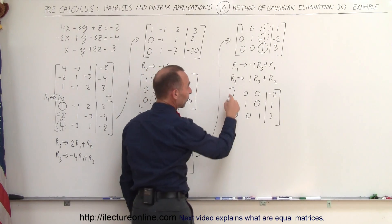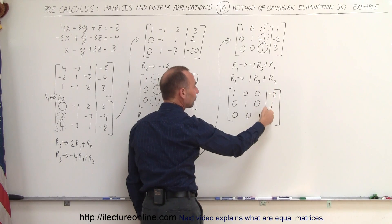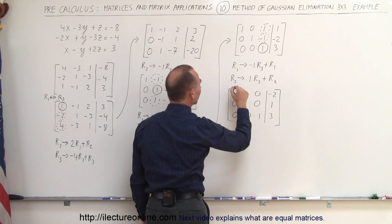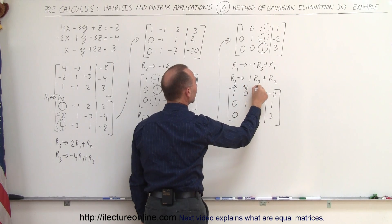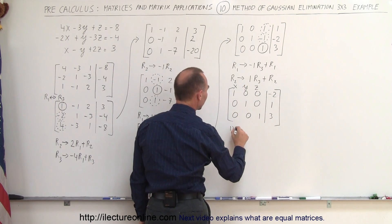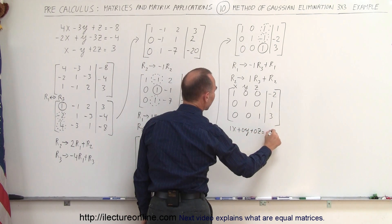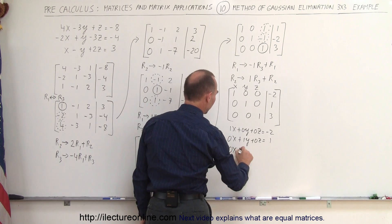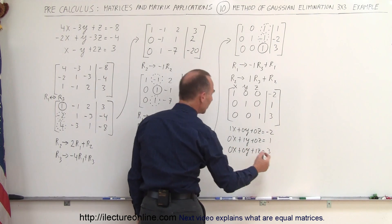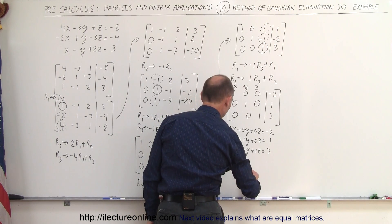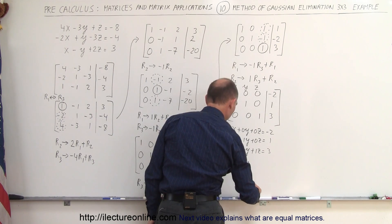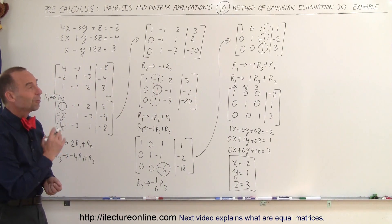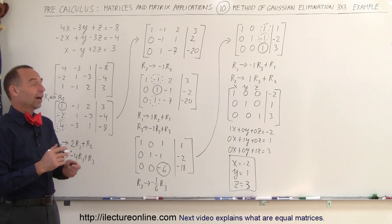Now we are done, because we have 1s across the diagonal and 0s everywhere else — these are the values for x, y, and z. This means 1x equals negative 2, 1y equals 1, and 1z equals 3. So x is equal to negative 2, y is equal to 1, and z is equal to 3 — which is the solution to this set of linear equations, found using the method of Gaussian elimination.